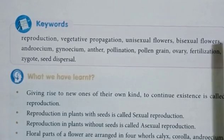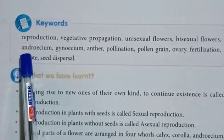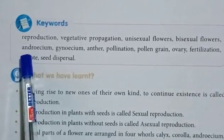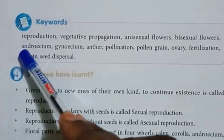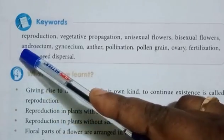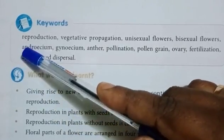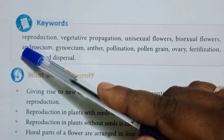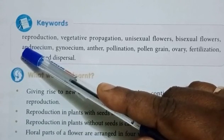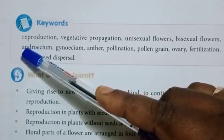Next, androsium. Androsium is the male part of the flower which consists of a long filament and an anther attached to its tip.